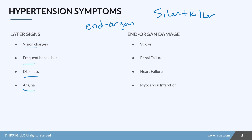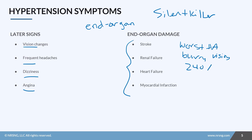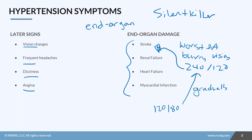The biggest end organ damage we see includes strokes, renal failure, heart failure, or myocardial infarction. A patient may present with the worst headache of their life and blurry vision, and it turns out their blood pressure is 240 over 120 and they've had a hemorrhagic stroke. Blood pressure doesn't just suddenly jump from 120/80 to 240/120 — this happens gradually. We need to stress how important it is that patients get their blood pressure checked at least annually; they can even go to CVS and have it checked for free.